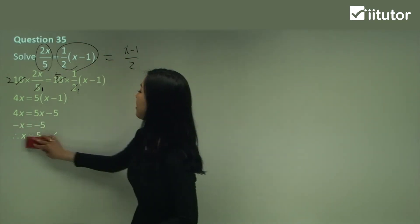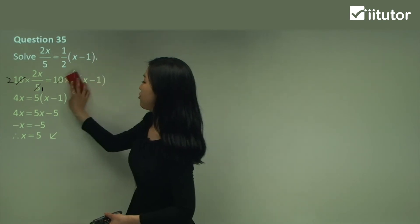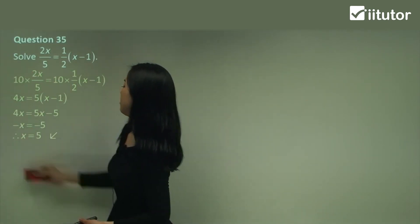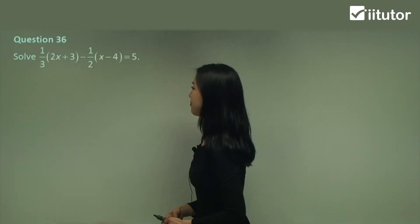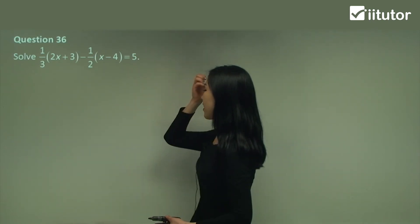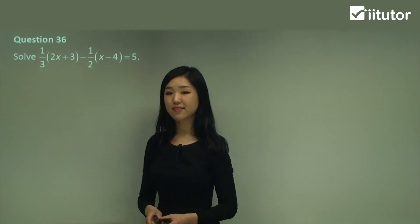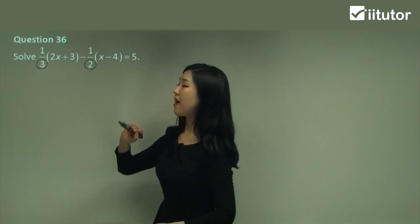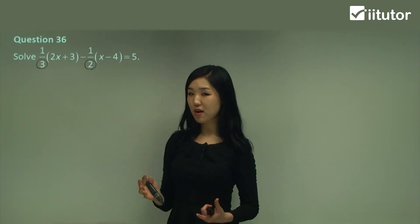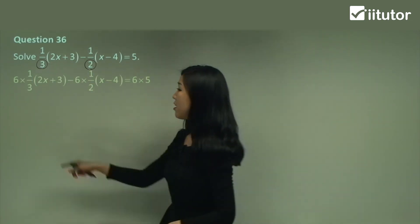So that's the answer for question 35 — x = 5. Question 36. Again we've got some fractions. The denominators are 3 and 2, and the lowest common multiple is 6. So I'm going to multiply by 6 to everything — 6 to this one, 6 to this one, and 6 to 5.